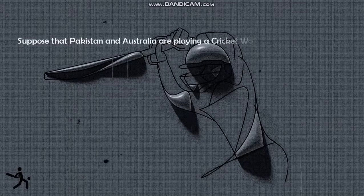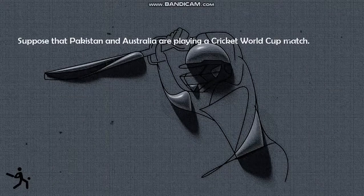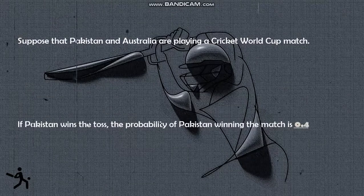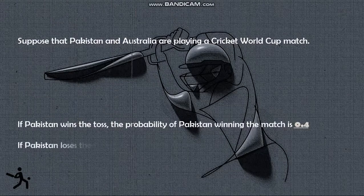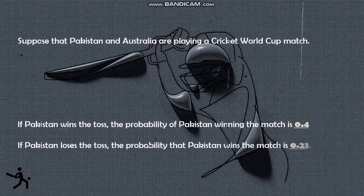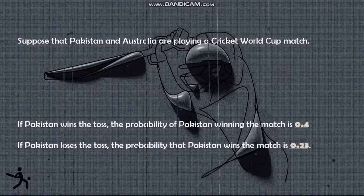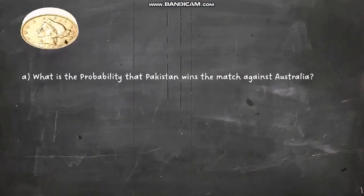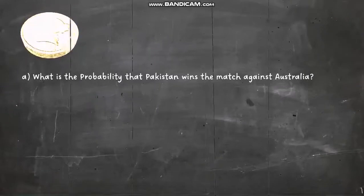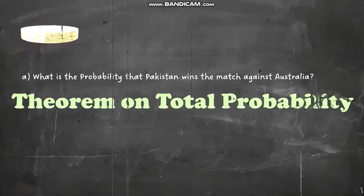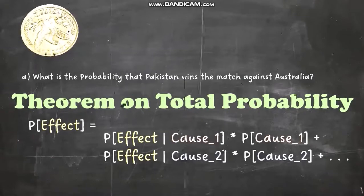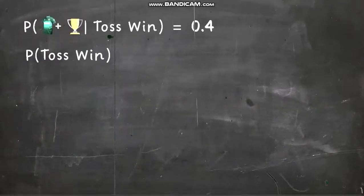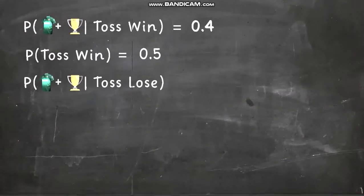Suppose that Pakistan and Australia are playing a cricket World Cup match. If Pakistan wins the toss, the probability of Pakistan winning the match is 0.4. Similarly, if Pakistan loses the toss, the probability that Pakistan wins the match is 0.23. Last time we discussed this problem, and the winning probabilities of different teams were calculated based on their capability to win or lose the toss.